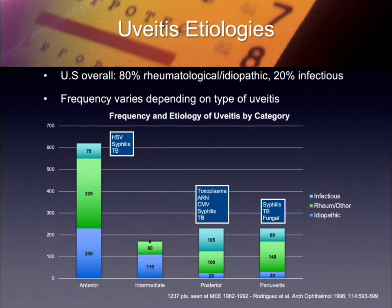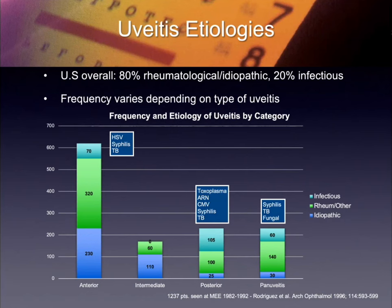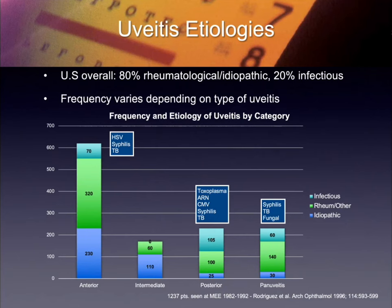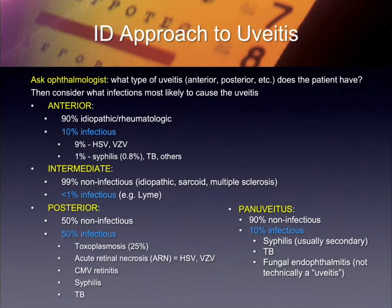When you're looking at uveitis, this is not new data — this is from 1996, from over 1,200 people seen at Massachusetts Eye and Ear. Overall, 80% of uveitis was either rheumatologic or idiopathic, and only about 20% overall were infectious. But it differs depending on what area of the eye you're looking at. Anteriorly it was mainly herpes, syphilis, and TB. Posterior uveitis was generally toxoplasmosis, acute retinal necrosis, CMV, syphilis, and TB. And pan-uveitis was syphilis, TB, and fungal.